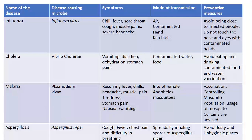Malaria is caused by the protozoan Plasmodium vivax. Symptoms include recurring fever, chills, headache, muscle pain, tiredness, stomach pain, and nausea — nausea meaning vomiting sensation. The mode of transmission is the bite of a female Anopheles mosquito. Prevention includes vaccination, controlling mosquito populations, and using mosquito nets.